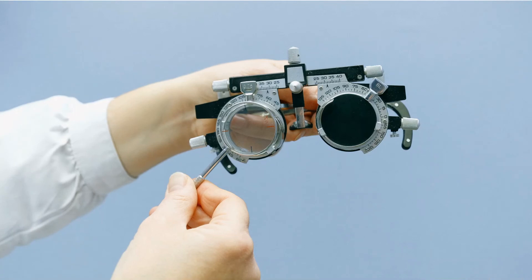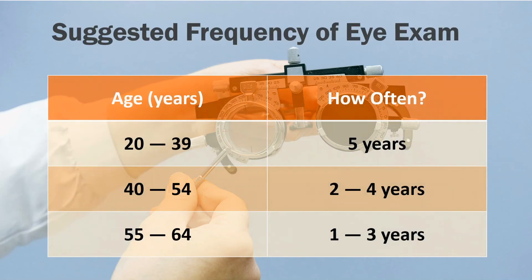A routine eye checkup is a good idea depending on your age. If you don't have any symptoms or vision problems, doctors recommend getting regular eye examinations based on your age. Between the ages of 20 and 39, get an eye examination done every five years.